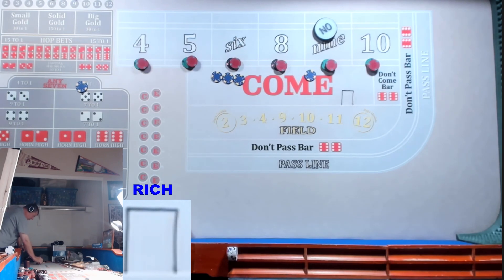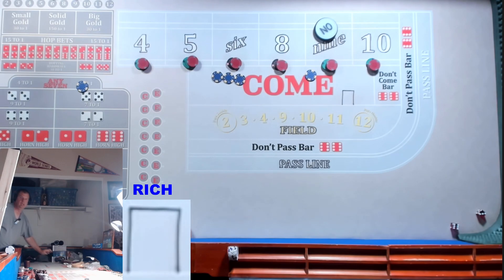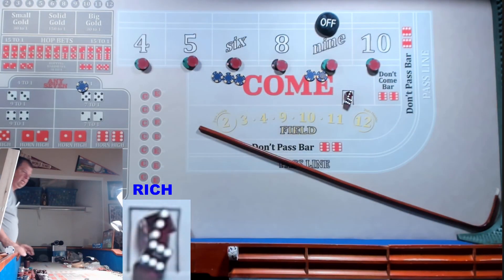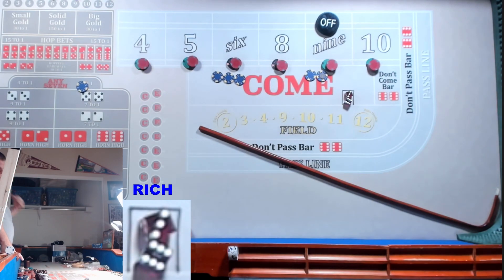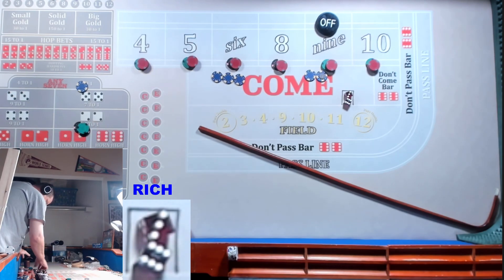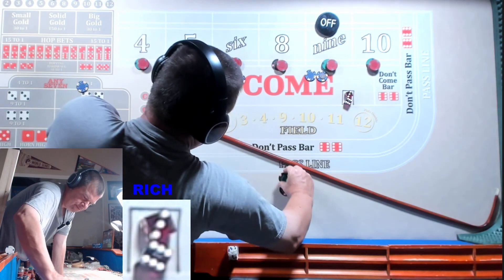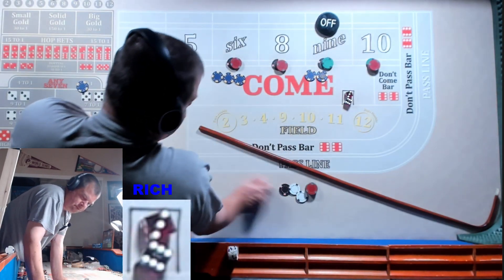Let's make that 6 look like 210. And let's press the 8 by 30, make it look like 120. And then we'll press the 5 and 9 by a quarter each. And we'll press the 4 and 10 by 20 each. That'll work. Let's hit that 6.